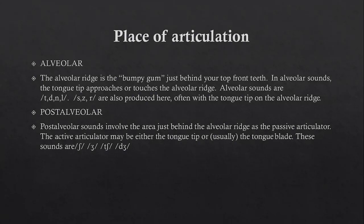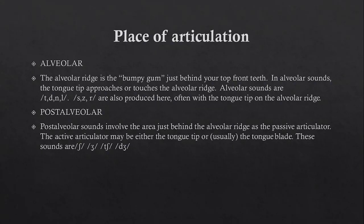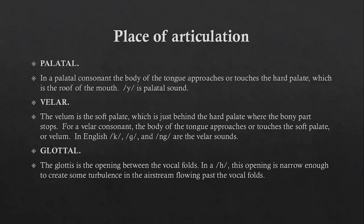Post-alveolar sounds involve the area just behind the alveolar ridge, in the roof of the mouth but not in the middle. The passive articulator is that area, and the active articulator may be either the tip of the tongue or the blade of the tongue, which touches or approaches the area behind the alveolar ridge. The sounds are sh, zh, ch, and j.